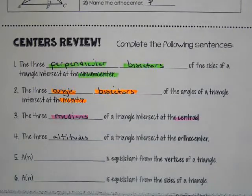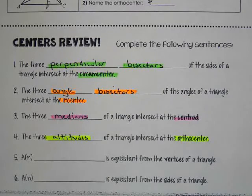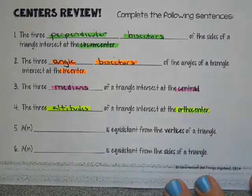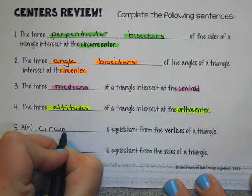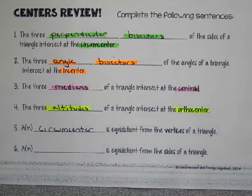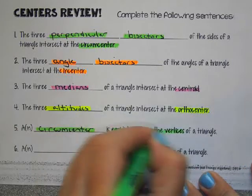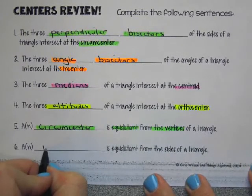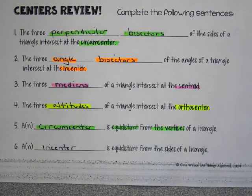So these are pairs of segments that you need to remember. And then we can talk about the points as well. What's equidistant from the vertices of the triangle is the circumcenter. That's the special relationship. So that's the circumcenter. And an incenter is equidistant from the sides. And that was done with the angle bisectors. So the incenter, equidistant from the sides.